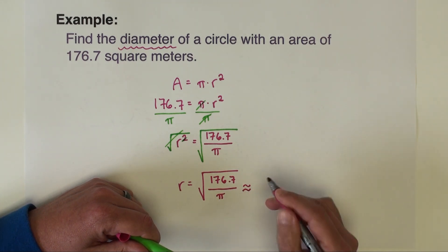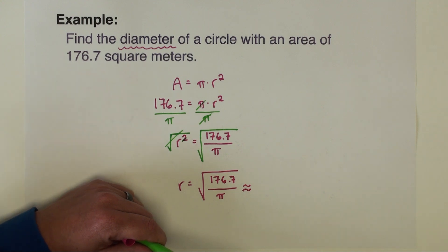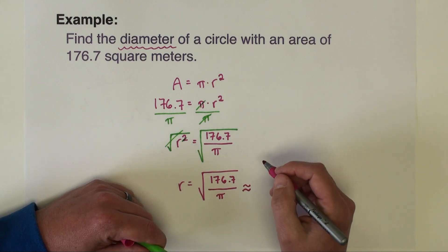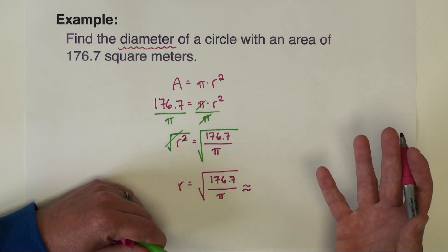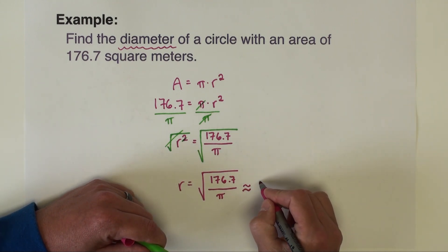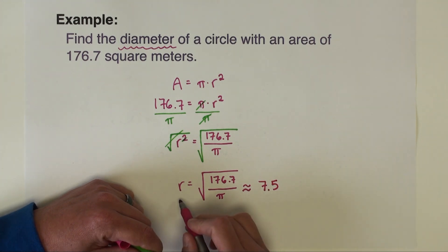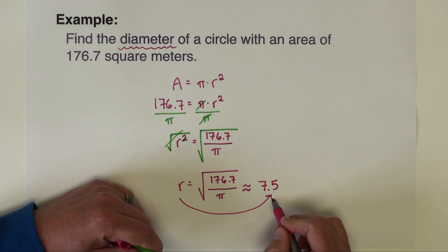So the radius is the square root of 176.7 divided by pi. And I'm going to go ahead and convert that into a decimal. So I'm going to take 176.7 divided by pi to start, and then I'm going to take the square root of that answer, and I get to the nearest hundredth or tenth would be the same, I get 7.5. Okay, so that is radius.